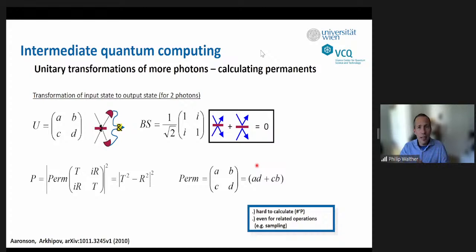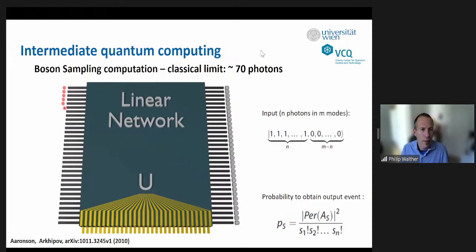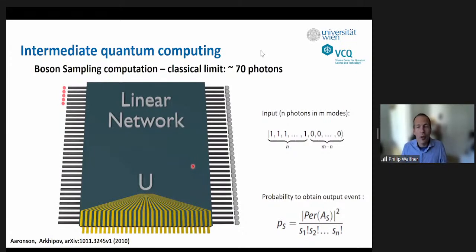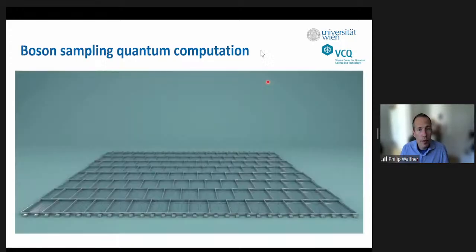The idea of a boson sampling computer is to build a network with many beam splitters — arranged to produce photon interference exhibiting bosonic nature — fill it with say 70 photons across hundreds of modes, let them propagate, and the photons themselves calculate the permanent for free by just interfering as nature dictates. The output distribution is related to the permanents, and this is so hard to calculate classically that above 70 photons no classical machine can do it. That's the idea of boson sampling.